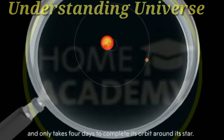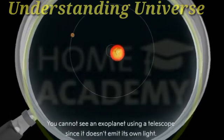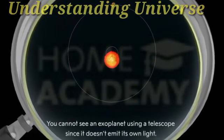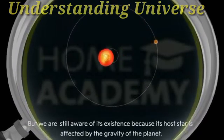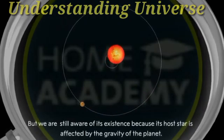It only takes four days to complete its orbit around its star. You cannot see an exoplanet using a telescope since it doesn't emit its own light. But we are still aware of its existence because its host star is affected by the gravity of the planet.